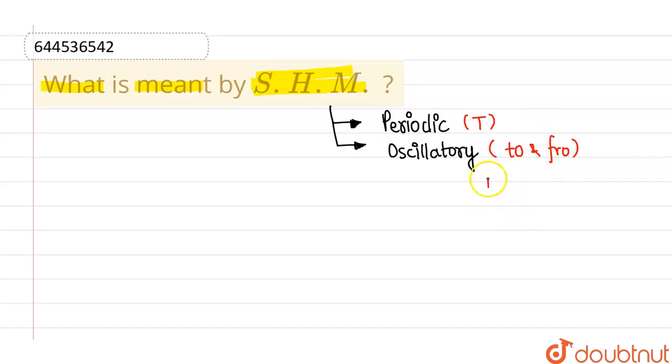And in simple harmonic motion, that fixed position is called mean position, about which to and fro motion is being performed. Now if you look at the oscillatory equation, the oscillatory equation is given by F equals to minus kx raised to power n.